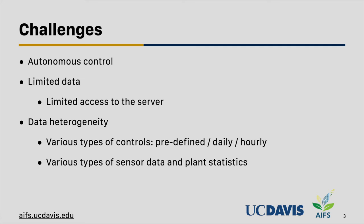The third challenge is data heterogeneity. There are different types of controls: some need to be fixed throughout the planning period, such as the material of the screen; some can be changed every other day, such as plant density; and others can be changed every hour, such as heating and CO2 set points. A similar heterogeneity exists in data — weather data can be observed every other hour, but plant statistics are only updated every other day.